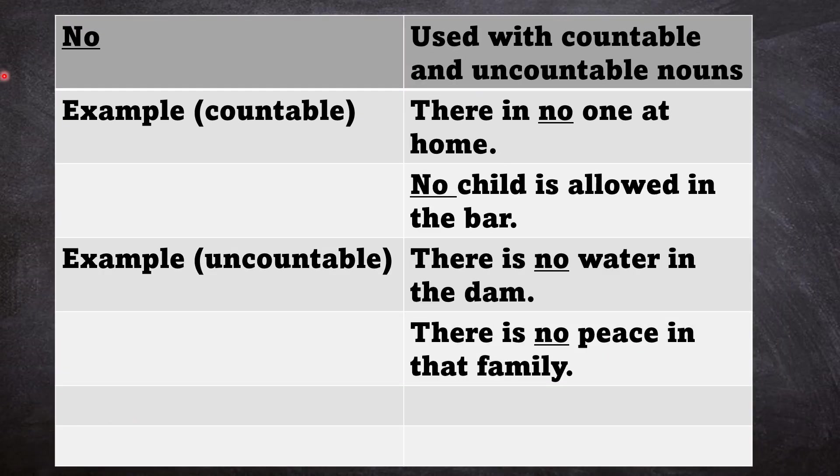We have no. No is used with countable and uncountable nouns. The first example is there is no one at home, which means these people could be countable. The other one is no child is allowed in the bar. The example for the ones used with uncountable nouns: there is no water in the dam. There is no peace in that family.